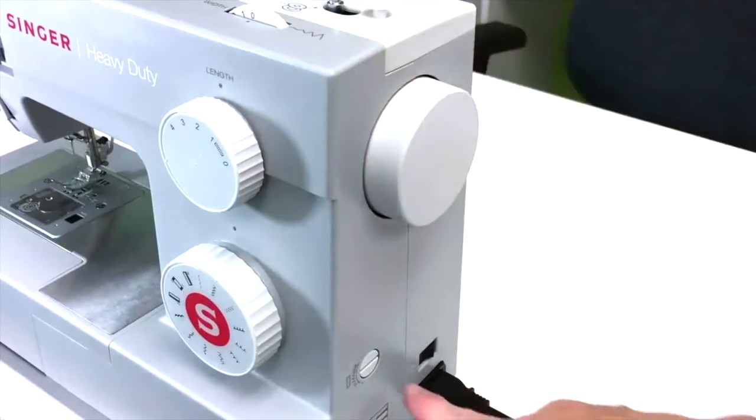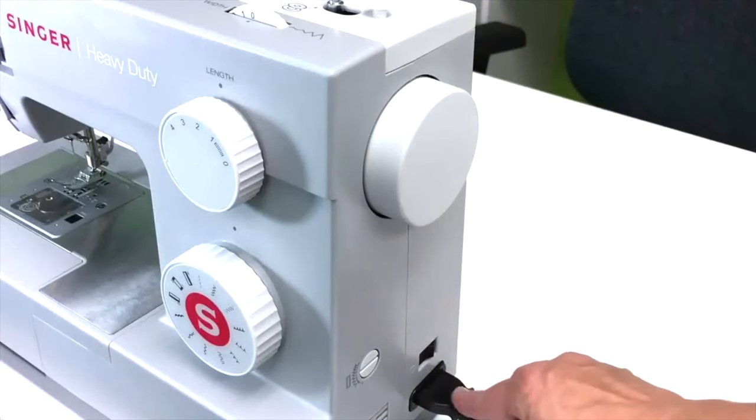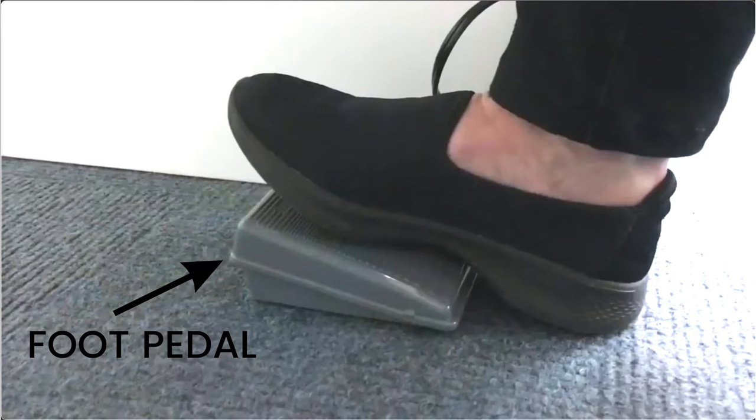On the side of my machine I also have a left and right side balance for when making buttonholes. I have an on-off switch and then the plug-in for the electricity and the foot control pedal.